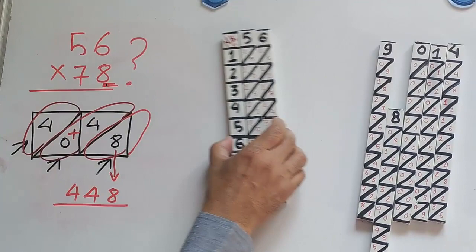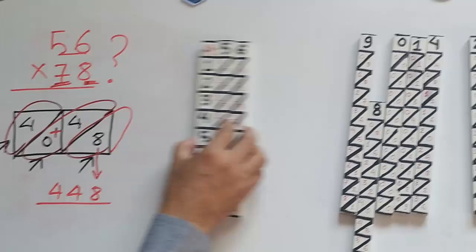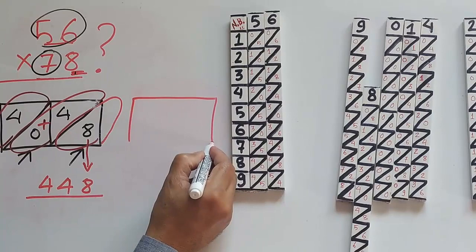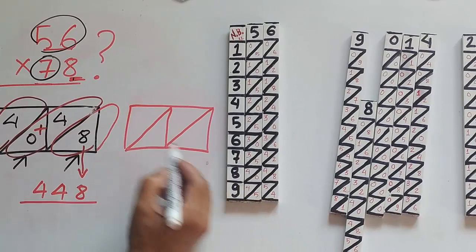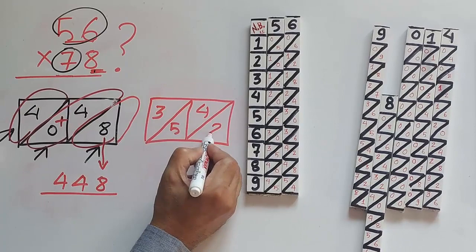For number 7, we need to take the 7's row numbers. In the row 7, we have the numbers 3, 5, 4, 2.